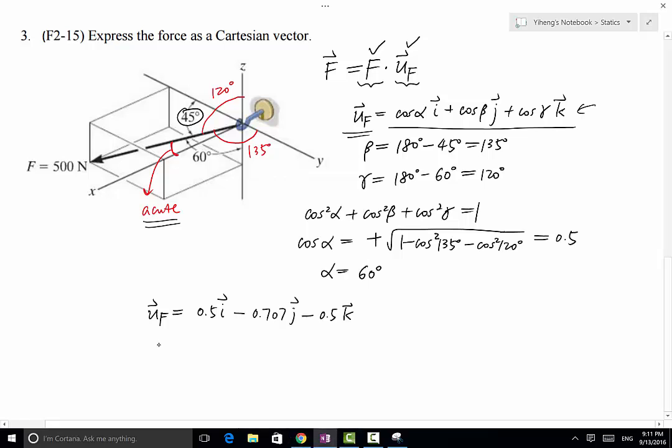For the force, this equals the magnitude times uf, which is 500 multiplied by the unit vector. So we multiply 500 to each one of these terms,